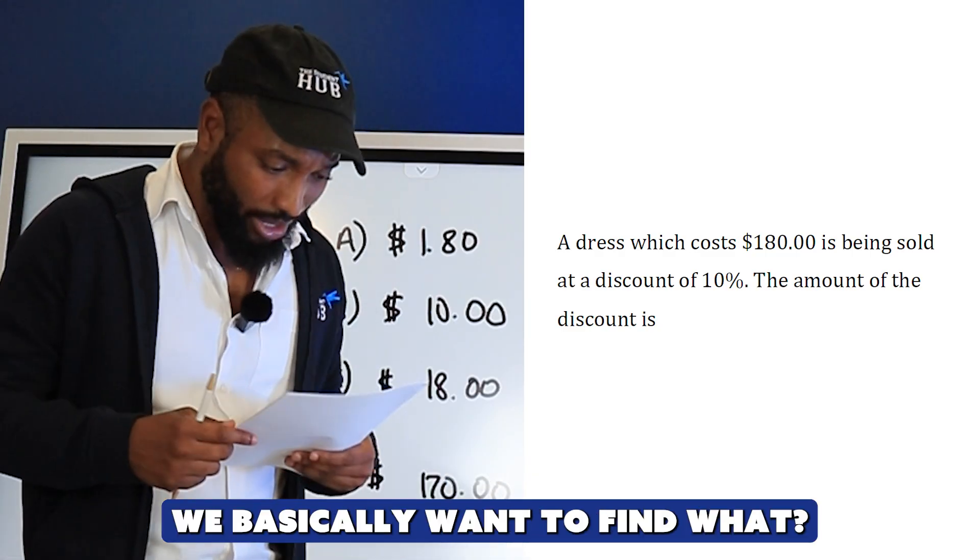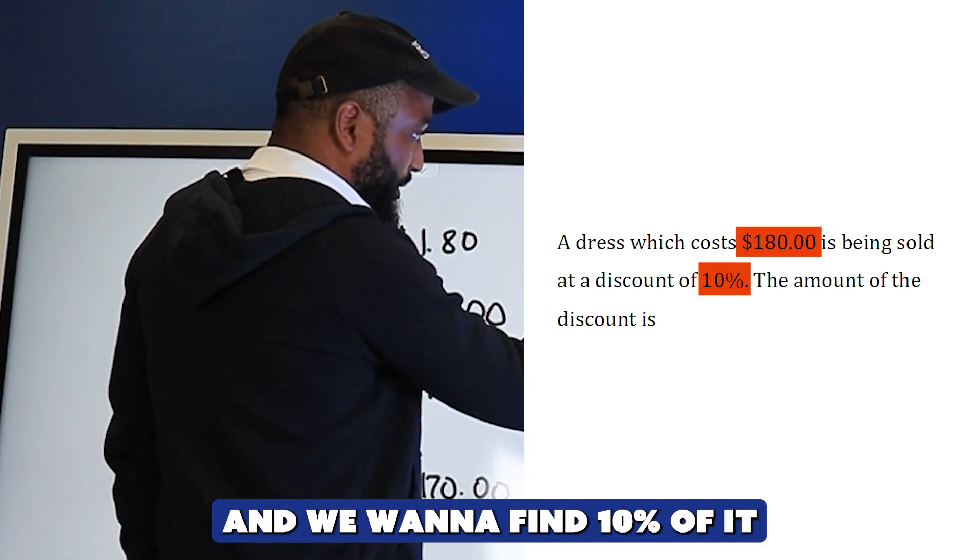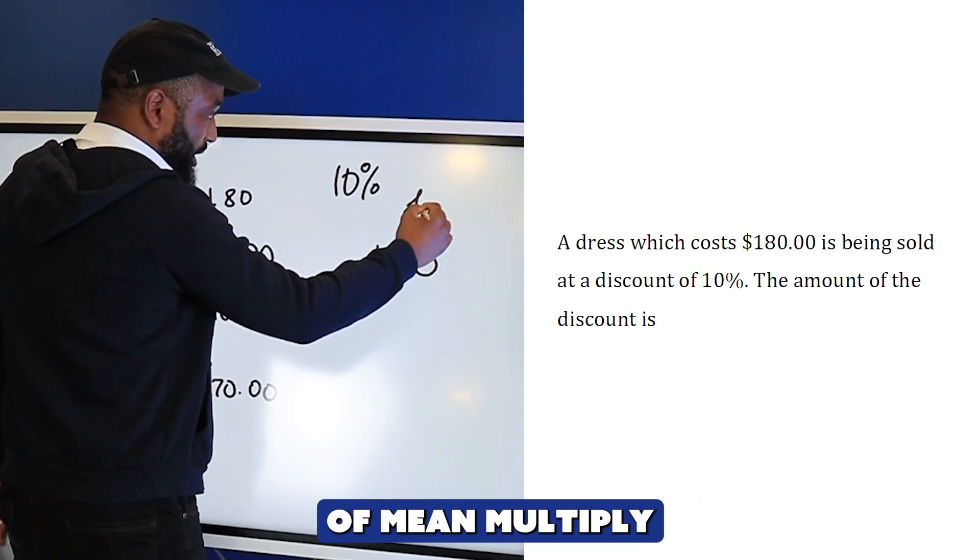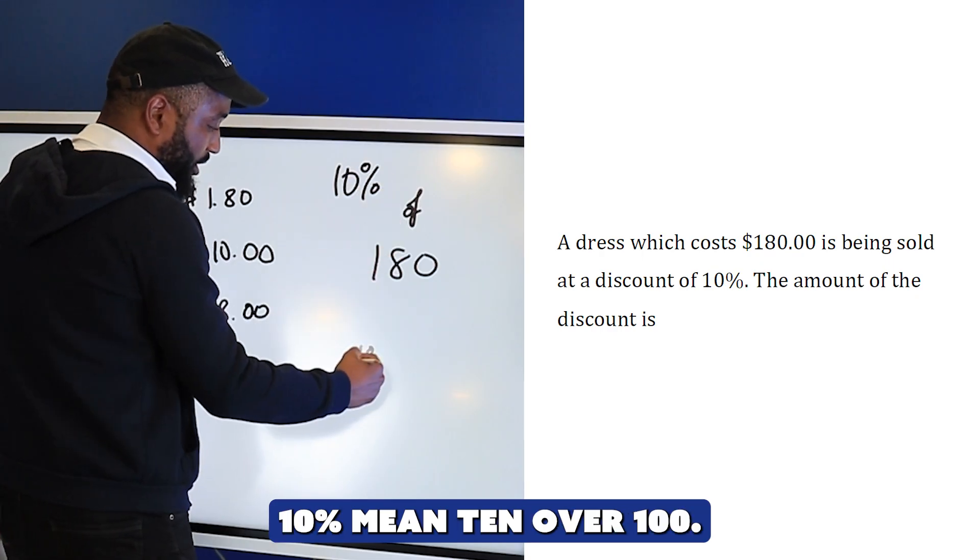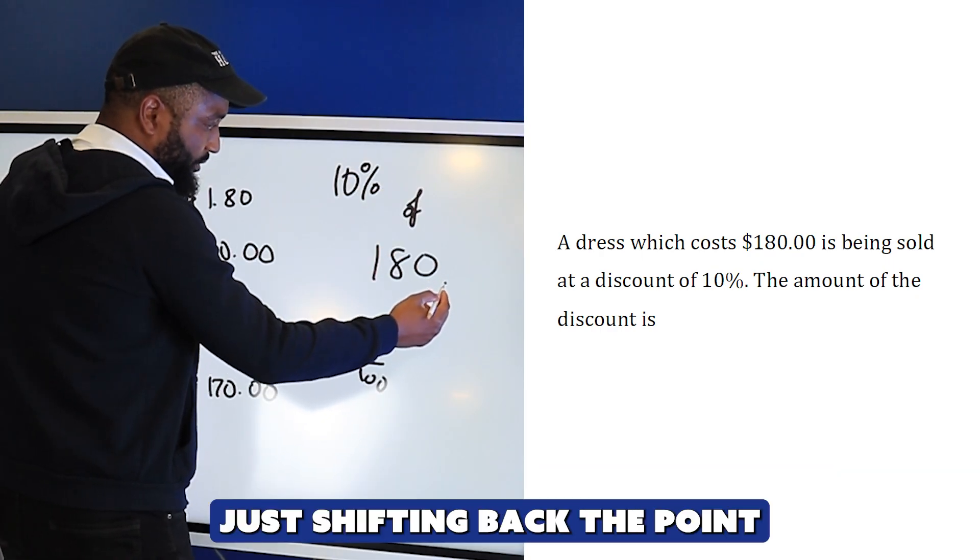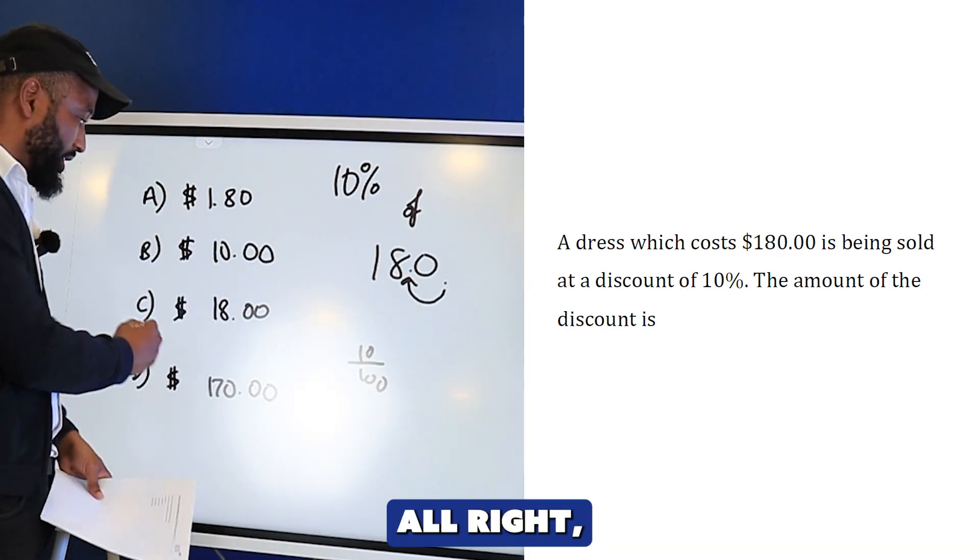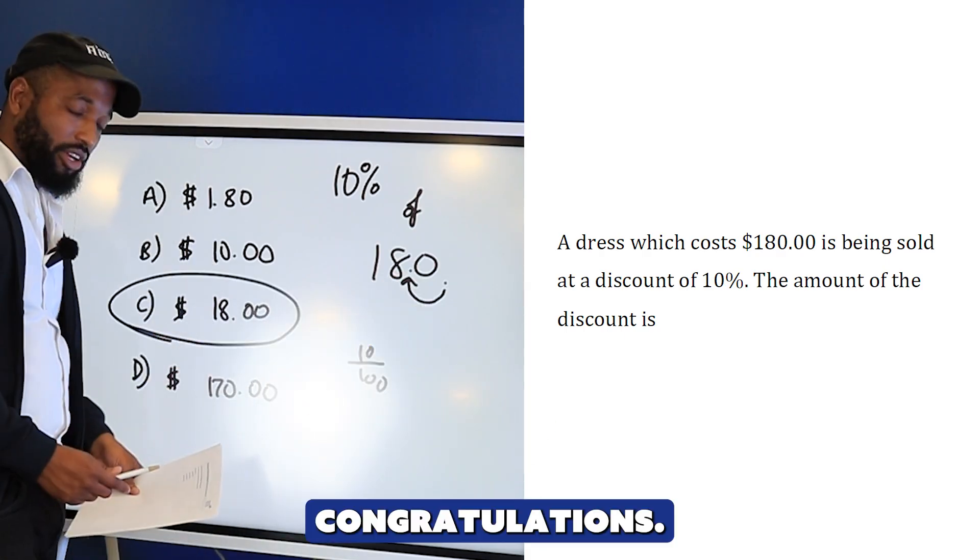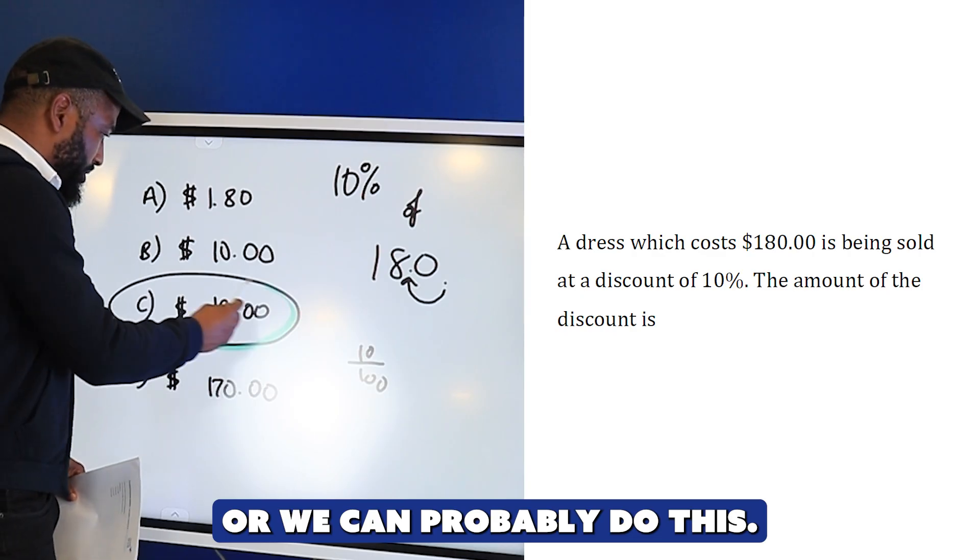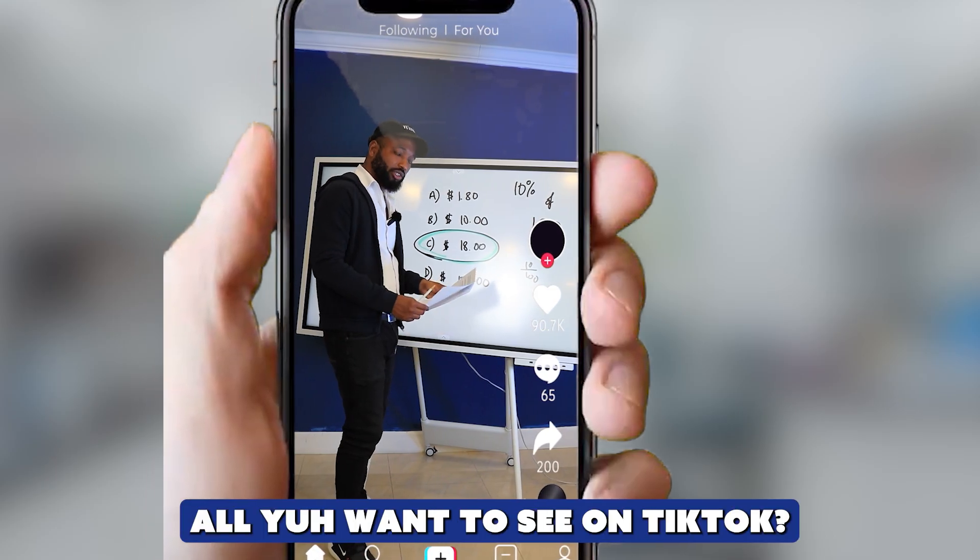We basically want to find 10% of 180. We have a number, 180, and we want to find 10% of it. 'Of' means multiply. 10% means 10 over 100. We know this is 1/10, so you're just shifting back the decimal point. The answer is $18.